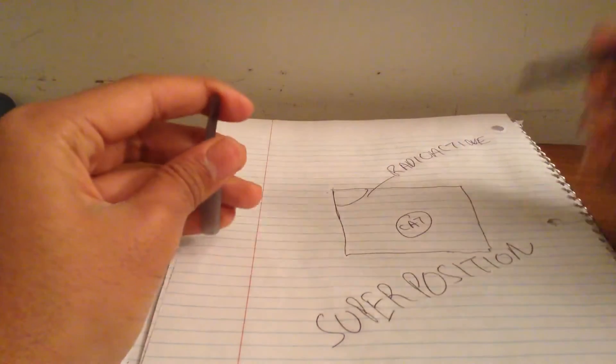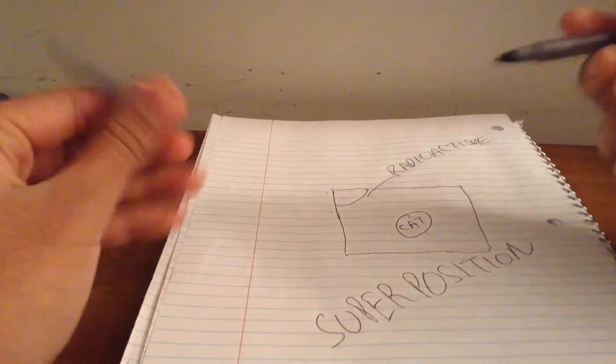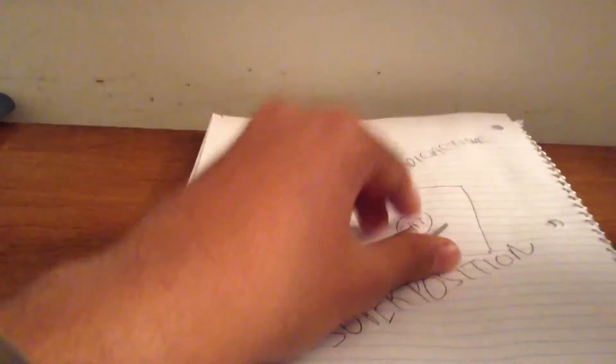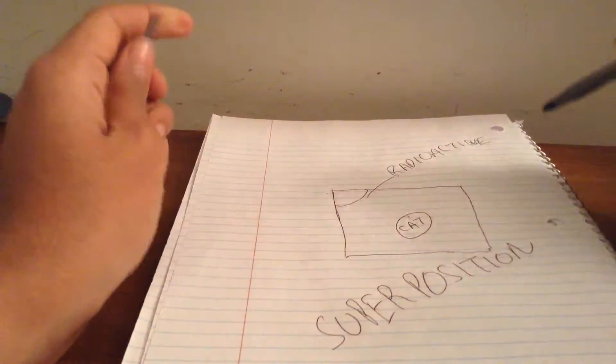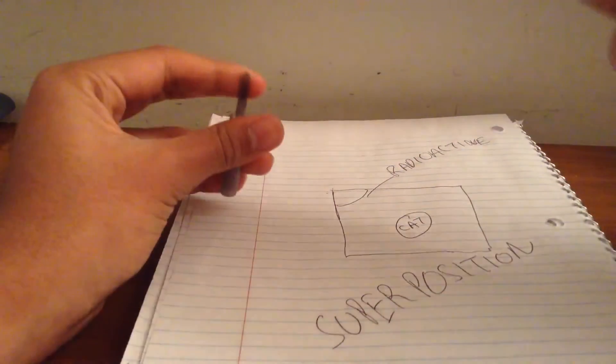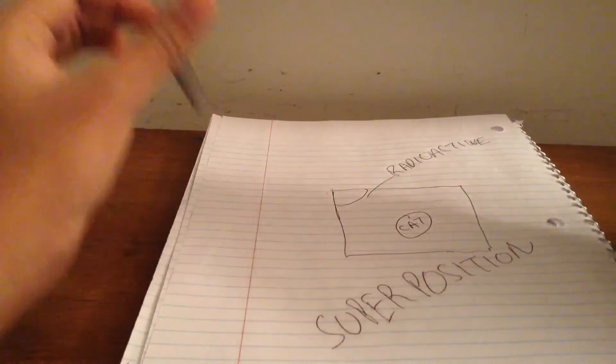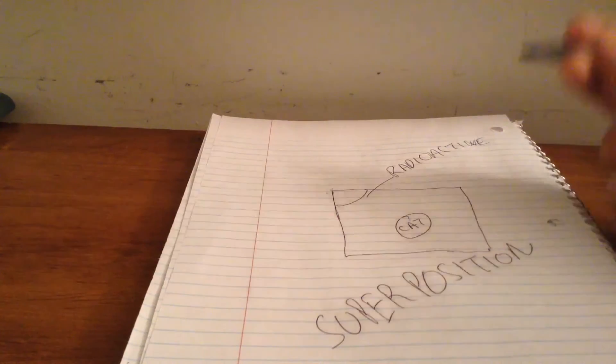Until you open the box, you're basically going to have to treat the cat as if it is both dead and it is alive, because you actually have no way of knowing. So you're going to have to believe that it is both dead and it is alive. But as soon as you open the box, as soon as the observer opens the box, that paradox has ended, the superposition has ended, and it basically is forced to choose one of the two outcomes. Either the cat is dead or the cat is alive.